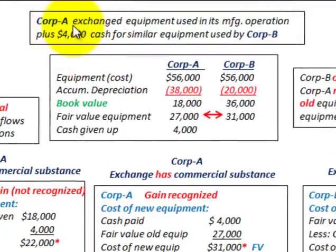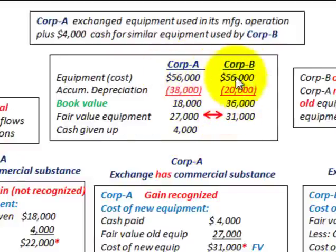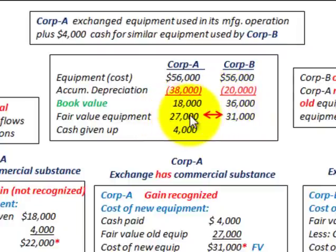Corporation A exchanged equipment used in its manufacturing operations plus $4,000 in cash for similar equipment used by Corporation B. So what we have here is Corporation A and Corporation B are going to exchange their equipment. We've got it listed here for Corporation A and then for Corporation B. We've got the cost, the accumulated depreciation on those pieces of equipment by each corporation, so the difference is the book value for both A and B. This is the fair value of the equipment, and Corporation A has also given up $4,000 in cash to Corporation B in exchange for this equipment.